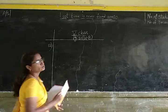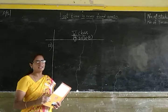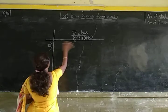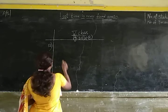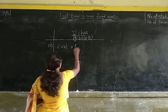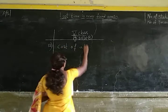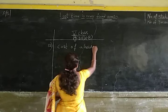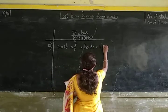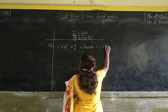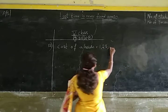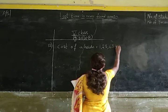Okay children, total means we have to do addition. First, what did Sunil purchase? Sunil purchased a house. So let us write down: cost of a house is equal to 1 crore 25 lakhs 63,456.